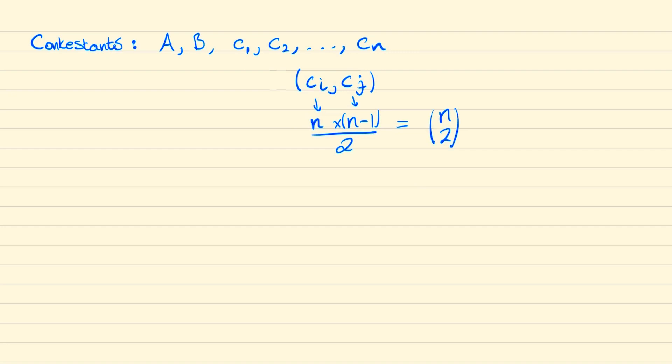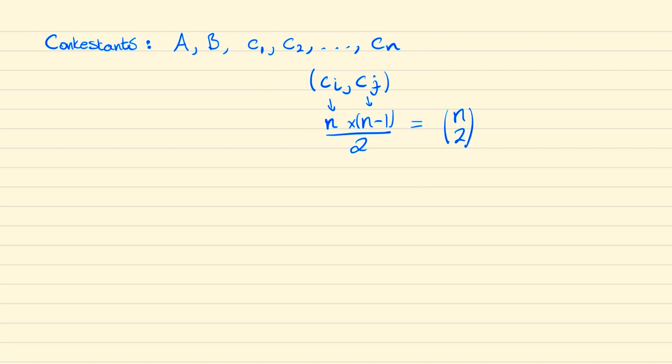Now considering A and B, there are two possibilities: either A played B, or A did not play B.